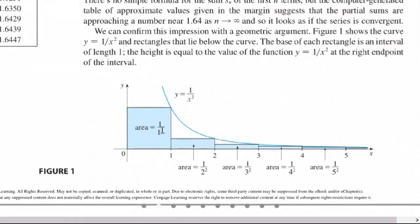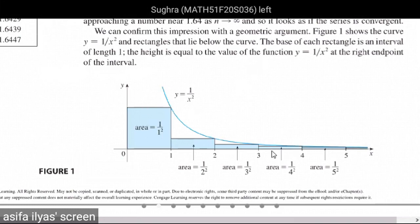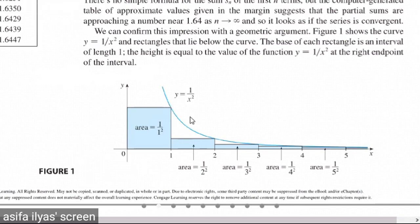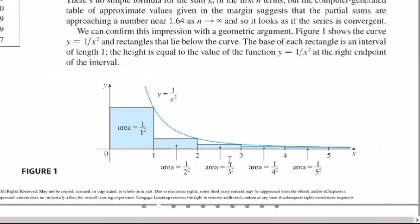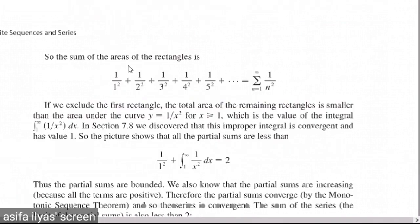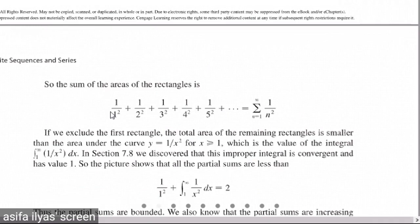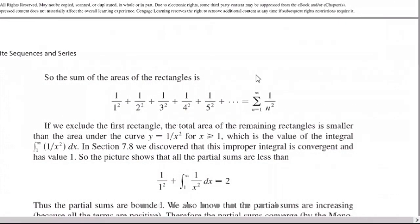We draw rectangles that lie below the curve, using right-end points. The base of each rectangle is an interval of length 1, since 2−1=1, 3−2=1, 4−3=1, and so on. The height of each rectangle equals the value of the function y = 1/x² at the right endpoint. So the heights are 1/1², 1/2², 1/3², and the sum of rectangle areas equals 1/1² + 1/2² + 1/3² + … + 1/n², which is our series.